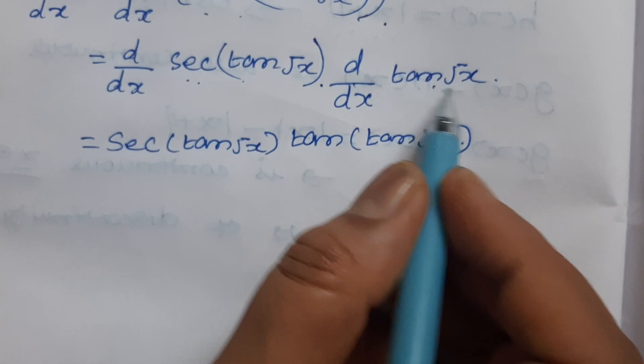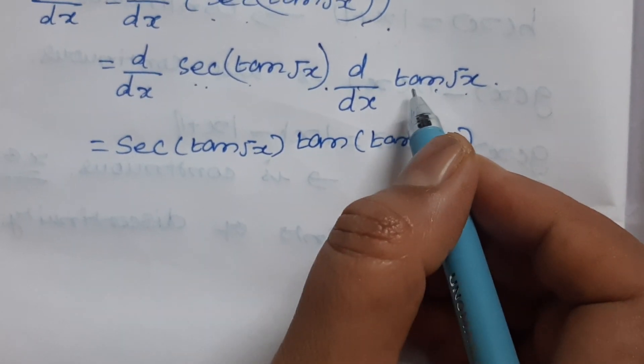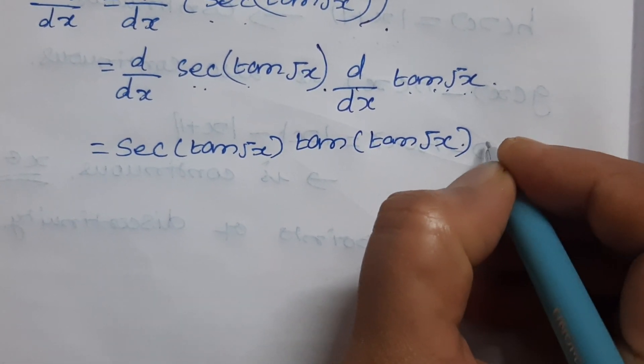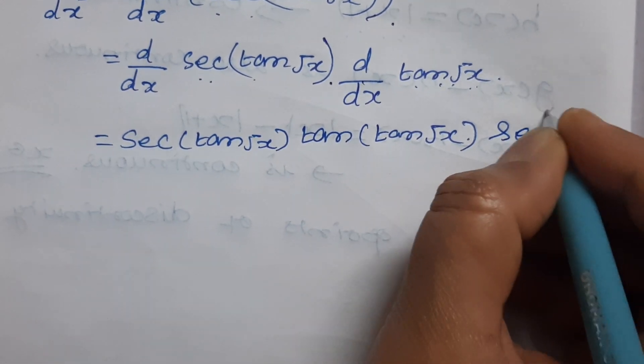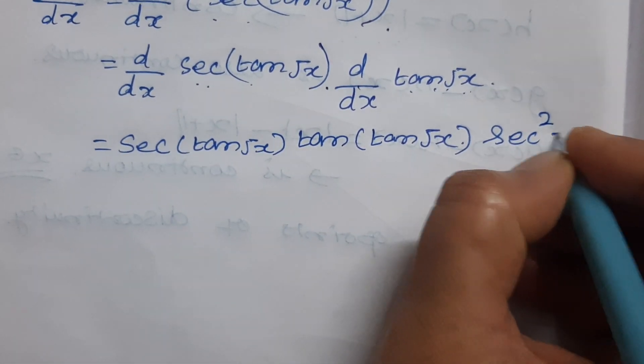Then, d/dx of tan√x. Differentiation of tan(x) is sec²(x). So, sec²(√x).